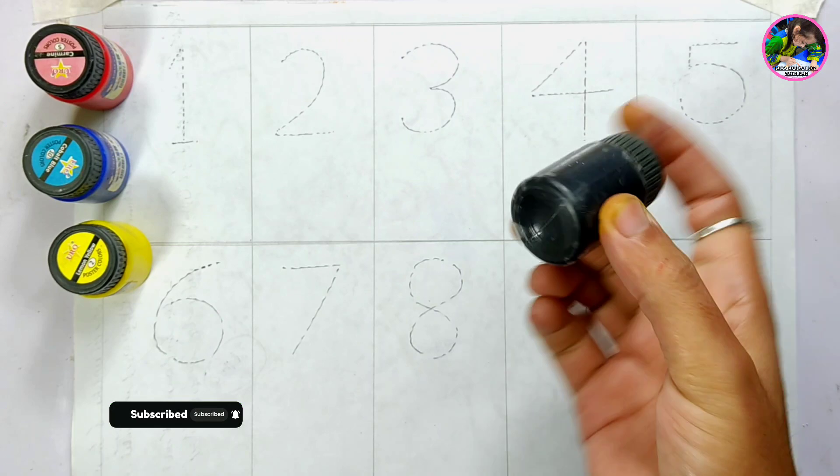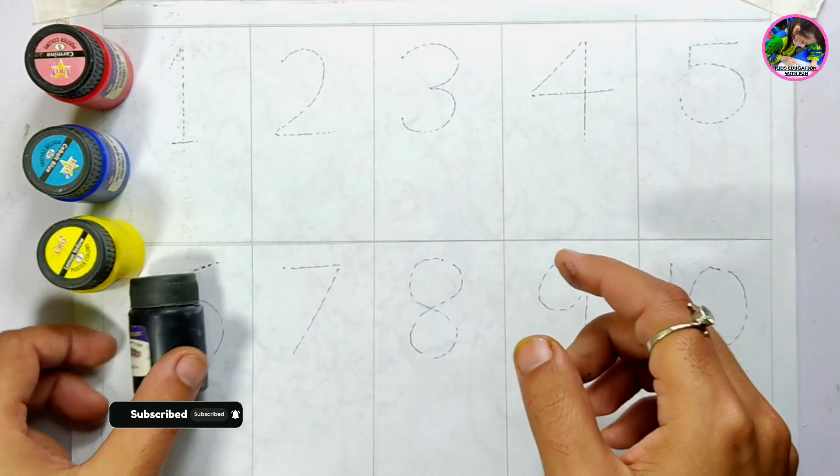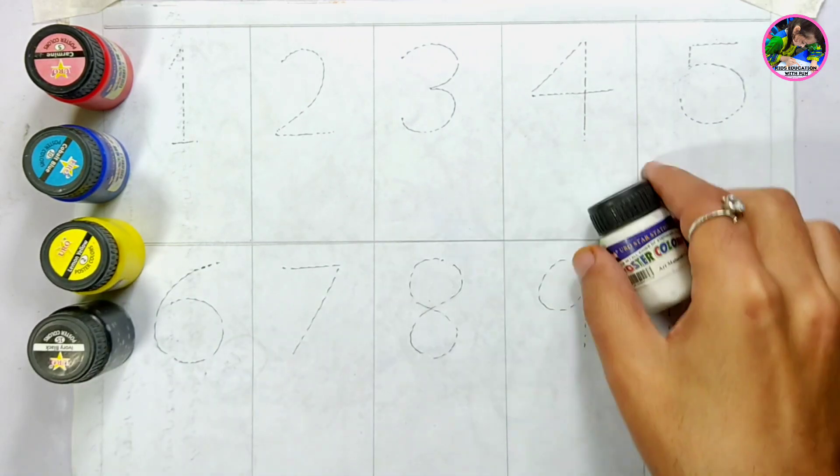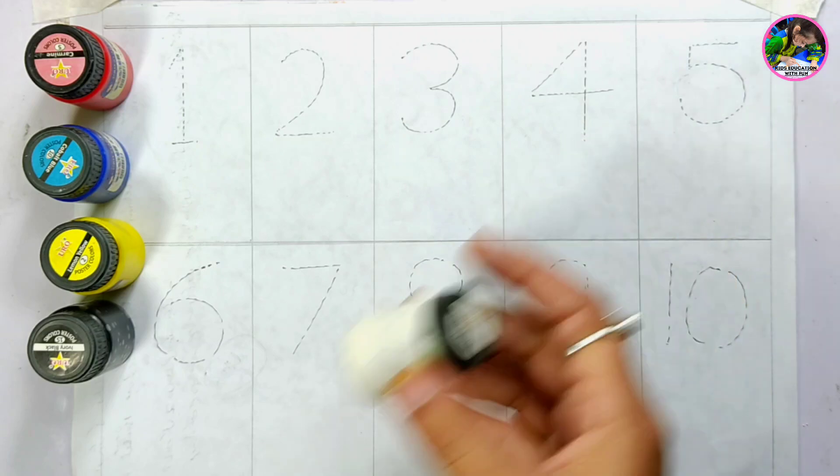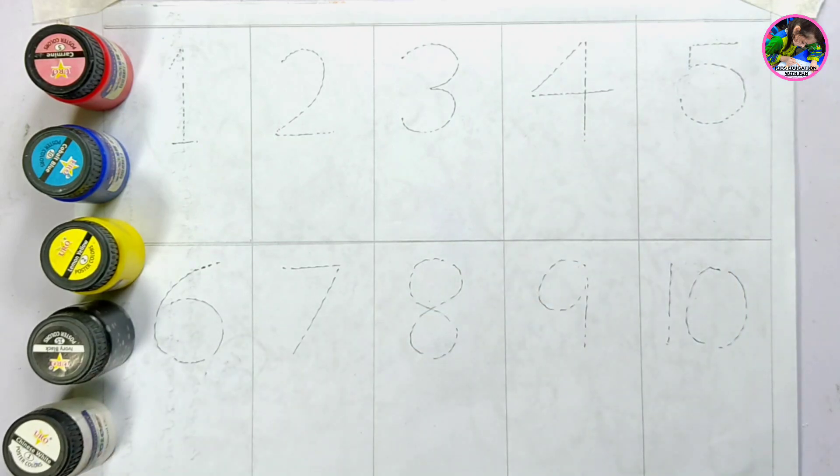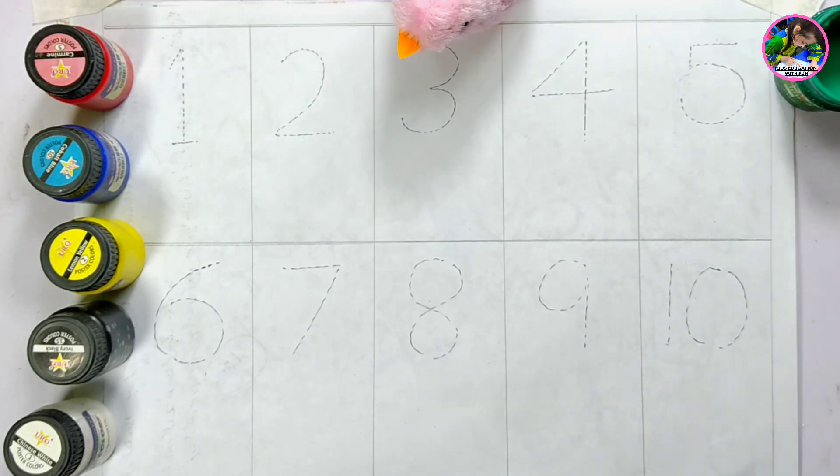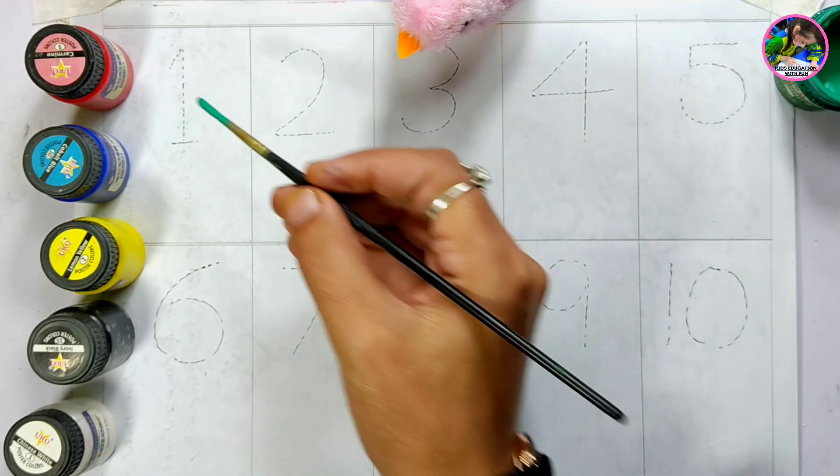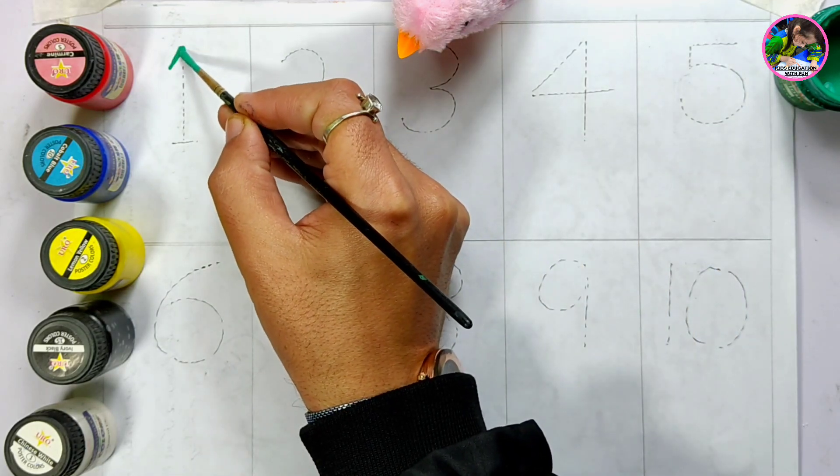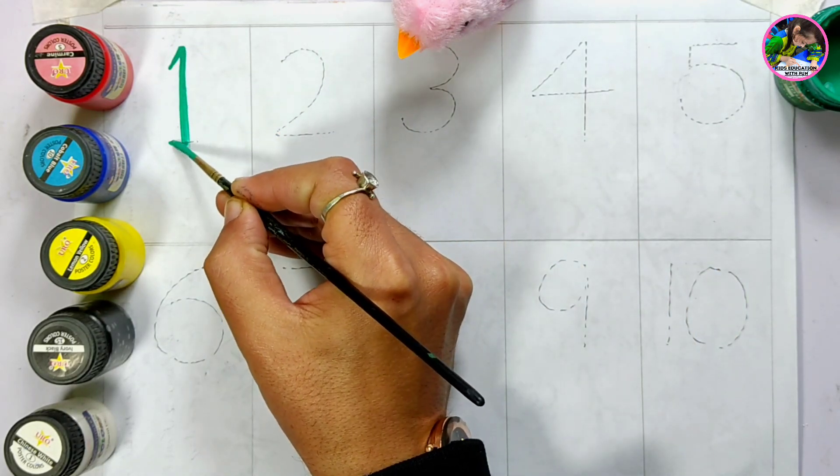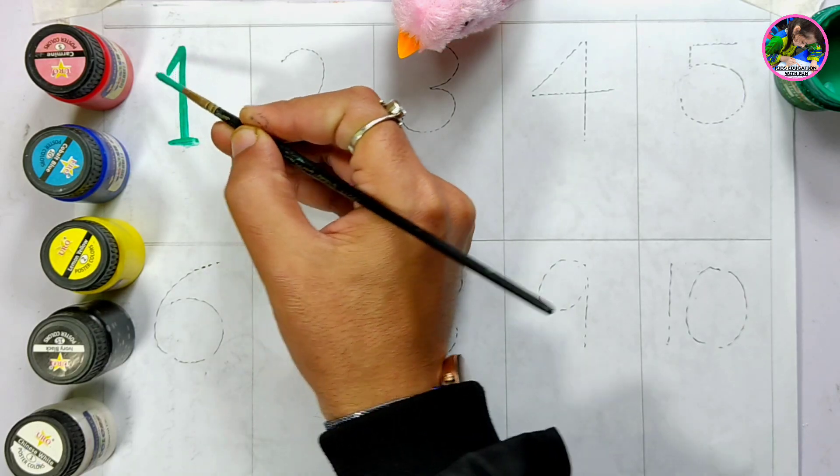Here we have black color and this is white color. Let's start drawing numbers from one to ten. This is dark green color. One, this is number one.